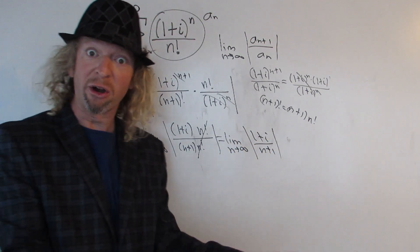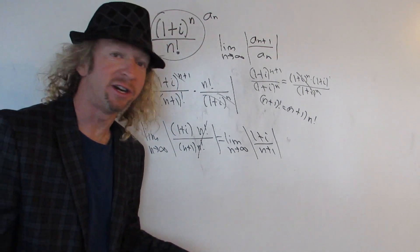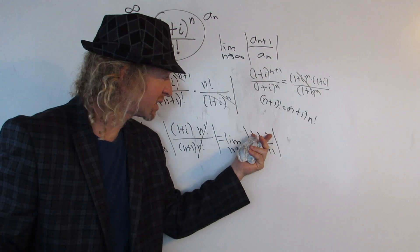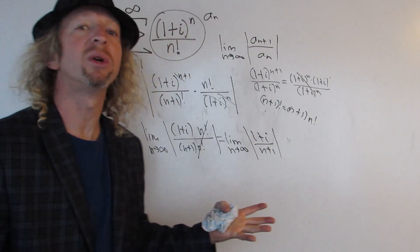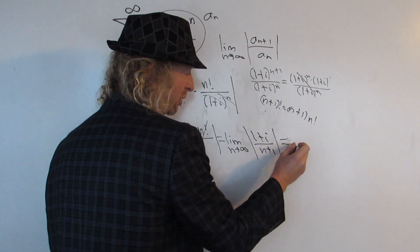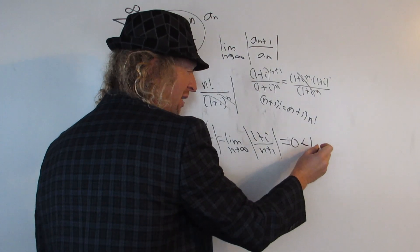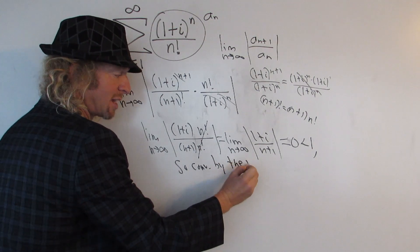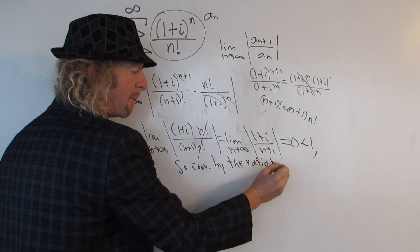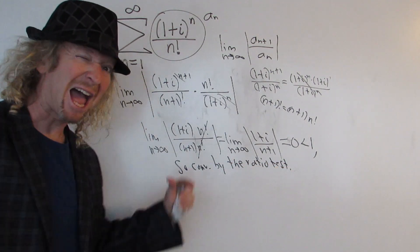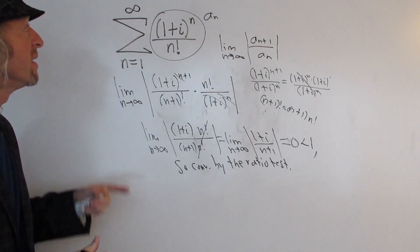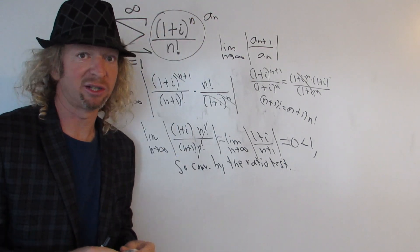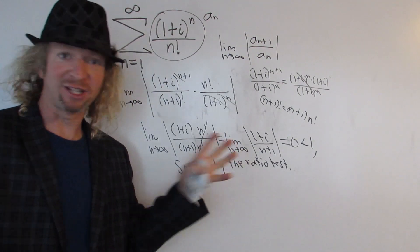(1 plus i) is a complex number. It is not going anywhere when n goes to infinity. So as n gets really big, you have (1 plus i) over something getting really, really big. So this gets really close to zero. That's less than 1, and so it converges by the ratio test. And whenever we have convergence by the ratio test, we have absolute convergence. That means that this converges in absolute value, so it also converges in the regular sense. So it's a little bit stronger. That's it. Thanks for watching. Take care.